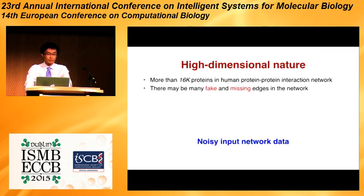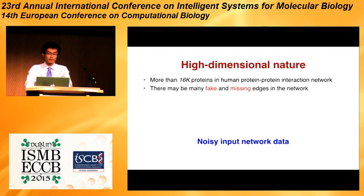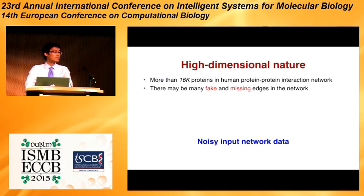One problem with the molecular network is its naturally high dimensionality. There are more than 16,000 proteins in the human protein-protein interaction network. So if we model each node as one dimension, we will have a 16,000-dimensional network space. Because of this complicated network structure, there may be many thick and missing edges in the network, so we need to find an effective way to model this large and noisy input network data.